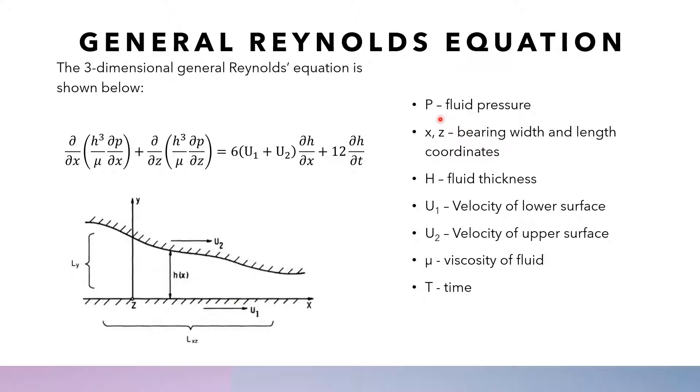P in the Reynolds equation stands for fluid pressure. X and Z are the bearing width and length coordinates. H is the fluid thickness. U1 is the velocity of the lower surface, U2 is the velocity of the upper surface. This symbol is the viscosity of the fluid, and T stands for time.